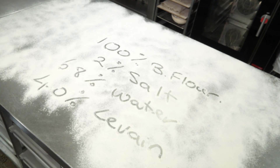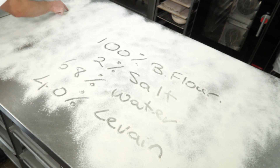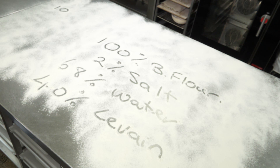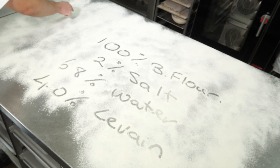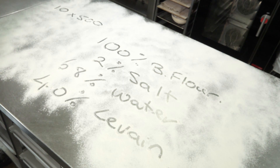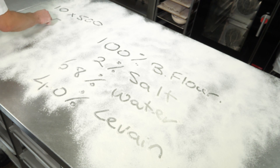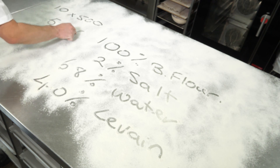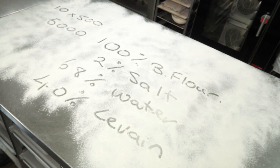So how many loaves of bread do you want to make? I want to make 10 loaves of bread. Okay, so we want 10 loaves. How heavy is your loaf of bread? 500 grams. How much dough do we need? 5,000 grams. So I need to make 10 loaves at 500 grams — I need 5,000 grams of dough.